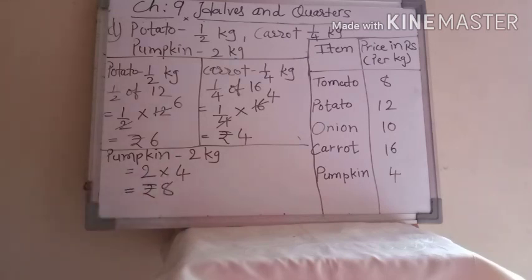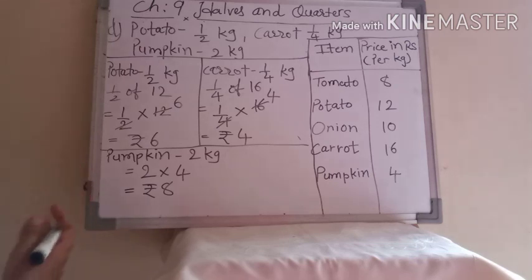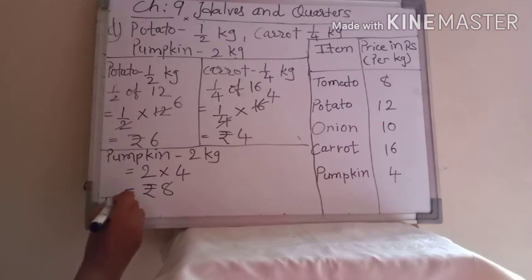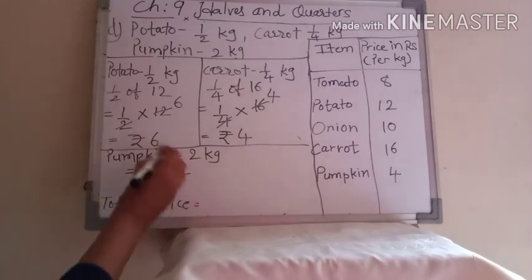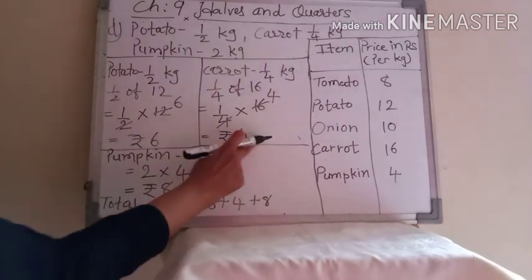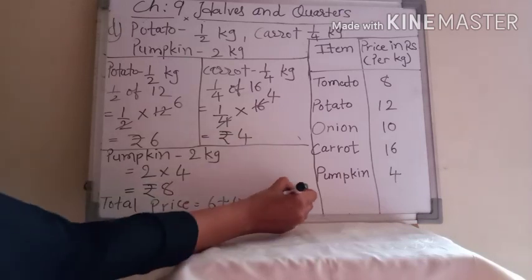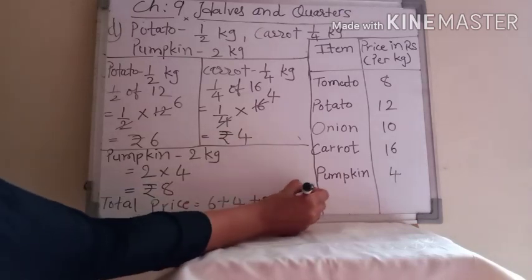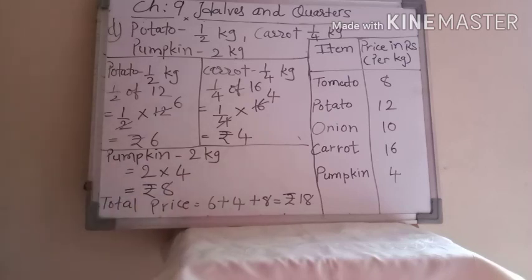Now we find the total — adding all three prices together: 6 plus 4 plus 8. 6 plus 4 is 10, and 10 plus 8 is 18. So total price is rupees 18. Can she buy these things in rupees 20? Yes, she can buy all the things in rupees 20.